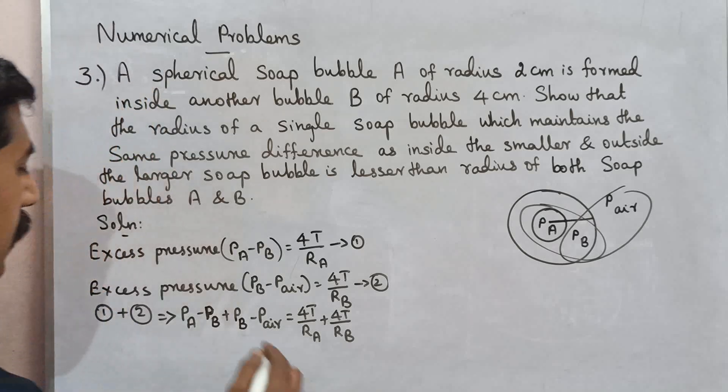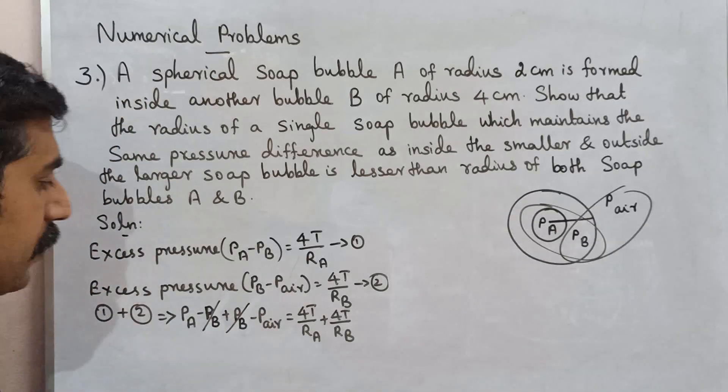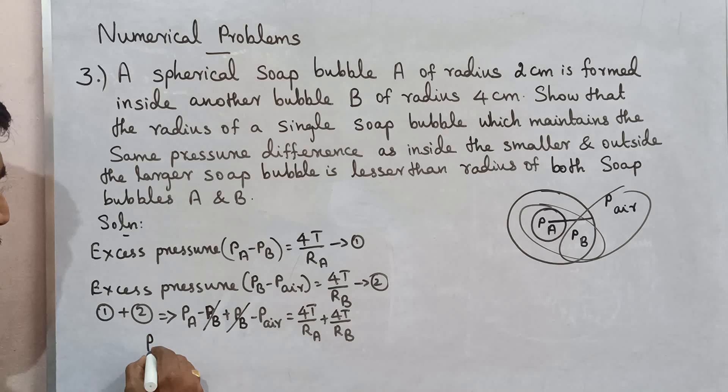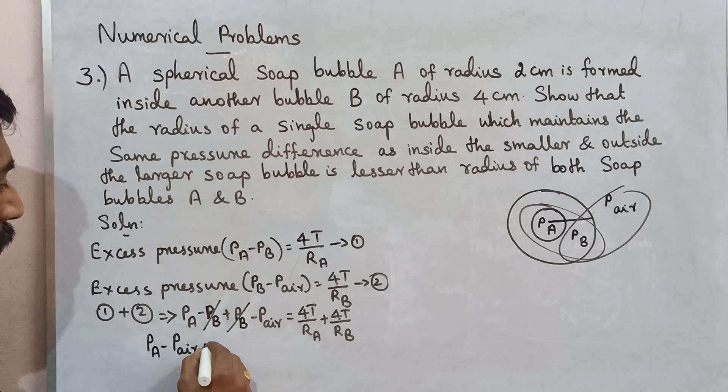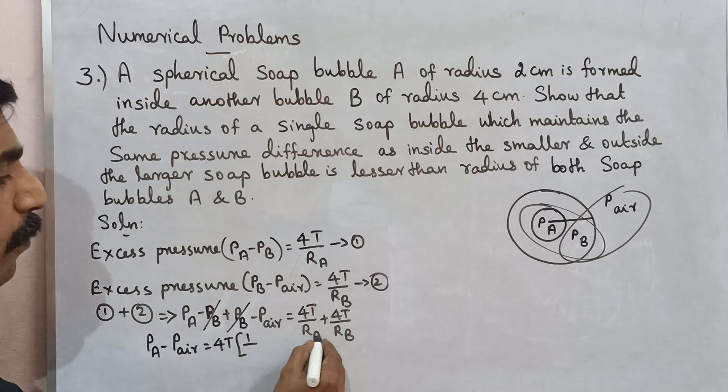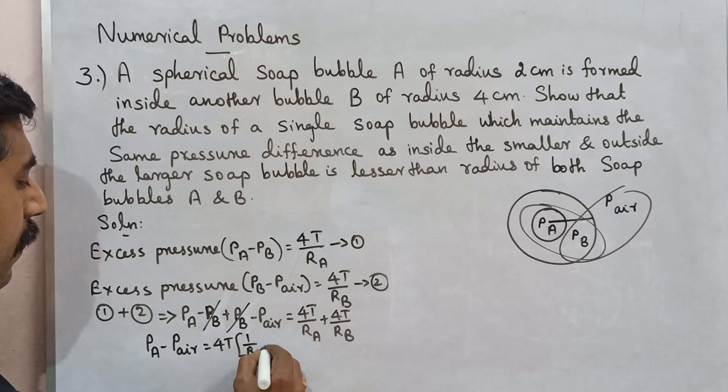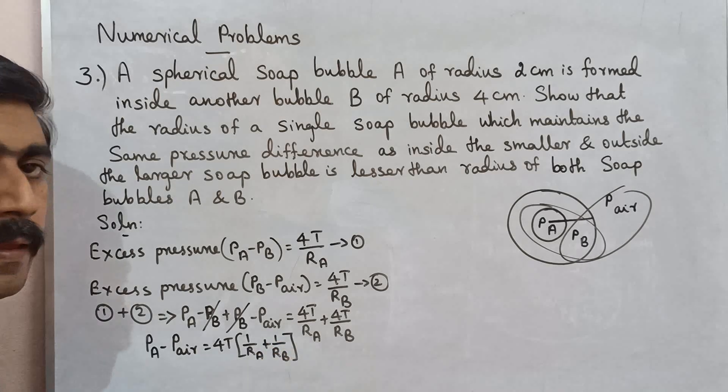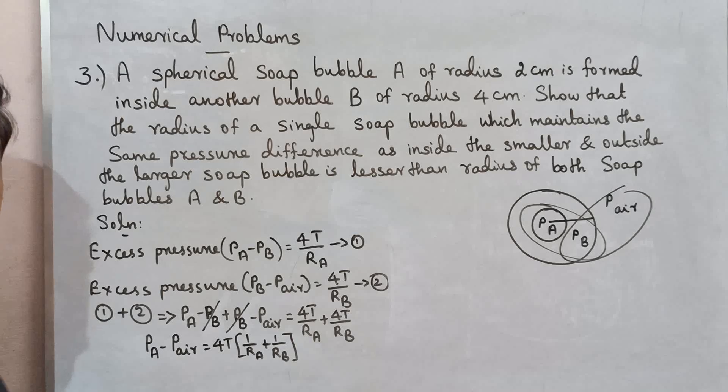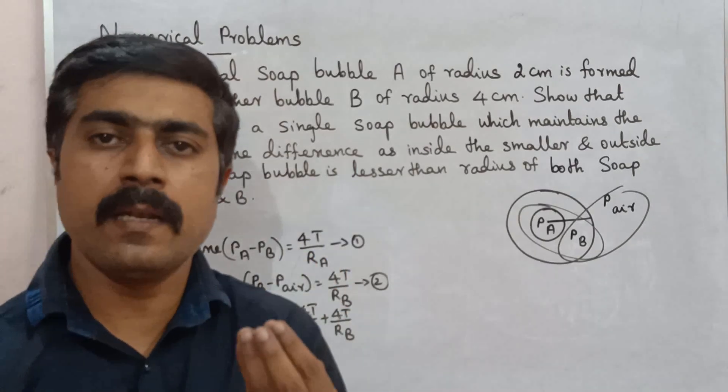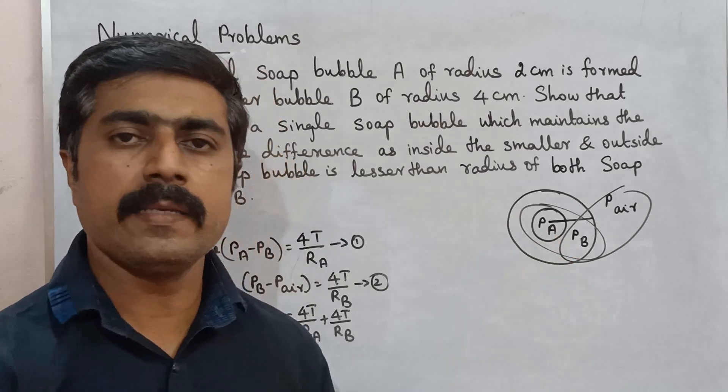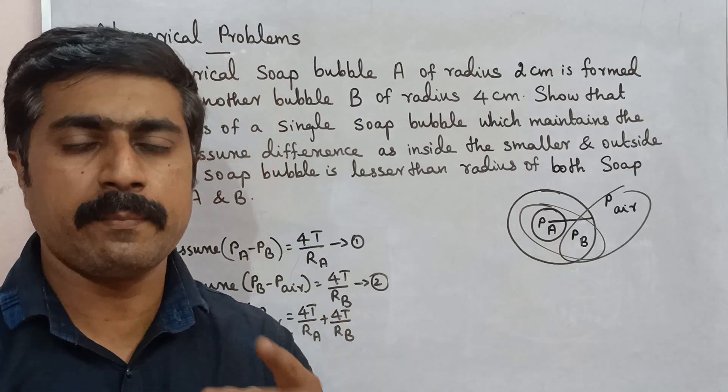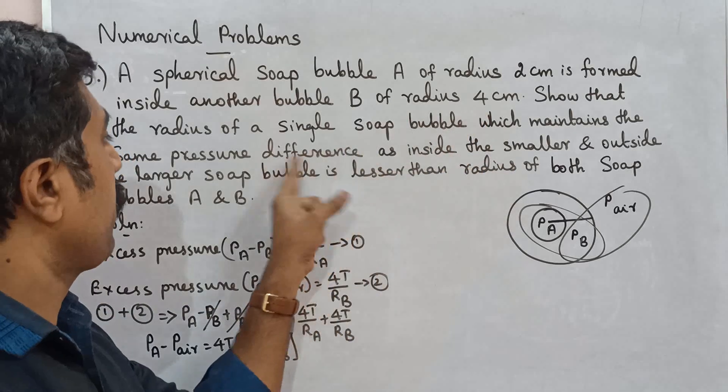So next step, minus Pb cancel Pb. Pa minus Pa which is equal to 4T common: 1 over Ra, radius of A, plus 1 over radius of B, bubble B.